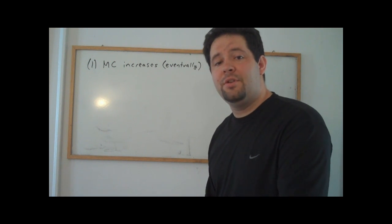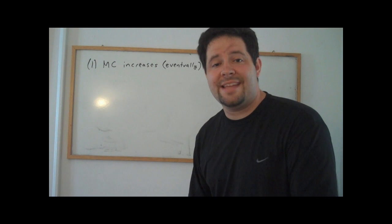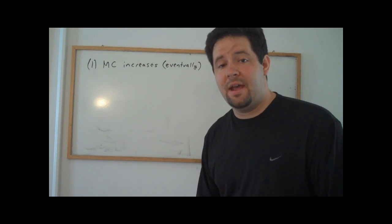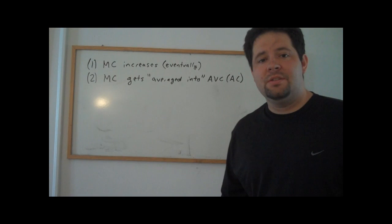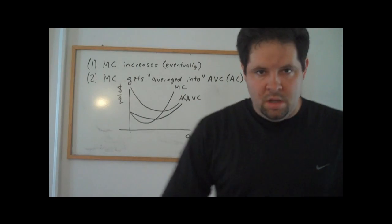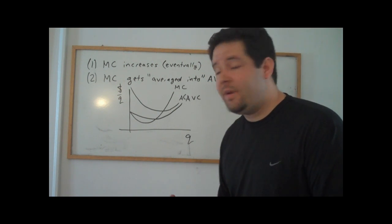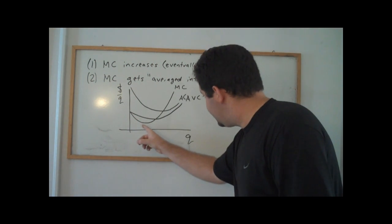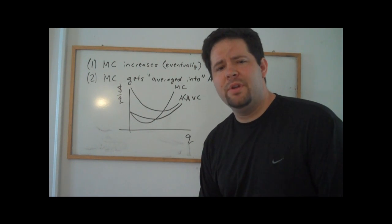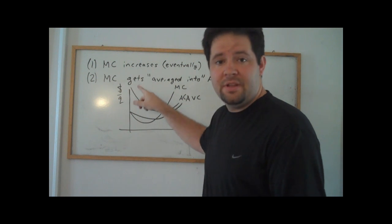The second observation is that marginal cost is the incremental cost — the added cost of producing additional units. In this sense, marginal cost gets averaged into both average variable cost and average cost. So let's consider what the graph actually looks like. For both average cost and average variable cost, marginal cost cuts right through the minimum, and there's a very good reason for this having to do with these two facts.